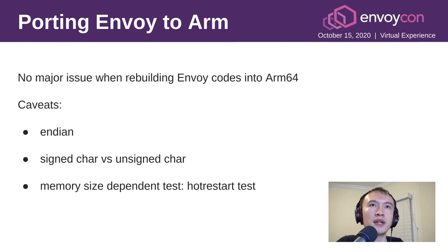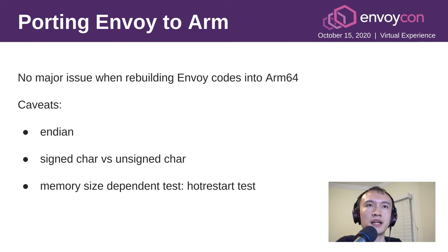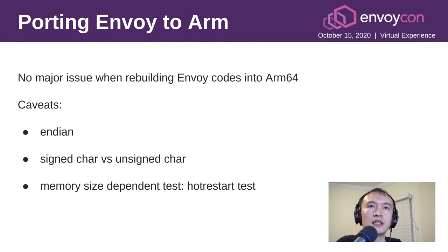Now I'm going to talk about porting Envoy to ARM. Envoy is a modern codebase and we didn't have any major issues building Envoy code for ARM64. Some caveats to pay attention to are NaN handling and the signed char versus unsigned char difference, which is the compiler default on those platforms. Memory-size-dependent tests also failed initially because the pointer size is different, which affects the hot restart version.